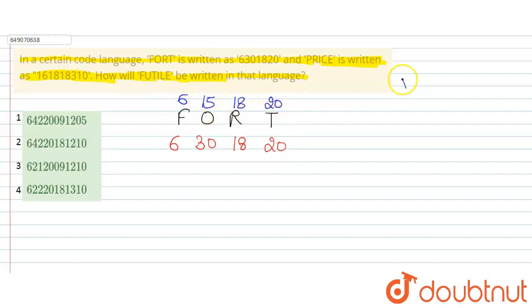This code is given as 6301820. So, the vowels like A, E, I, O, and U - in place of vowels, their place value is doubled. Here we have 15 into 2 is 30.